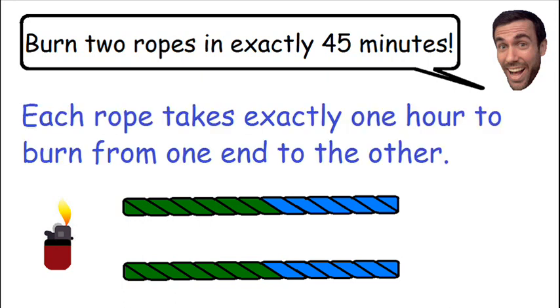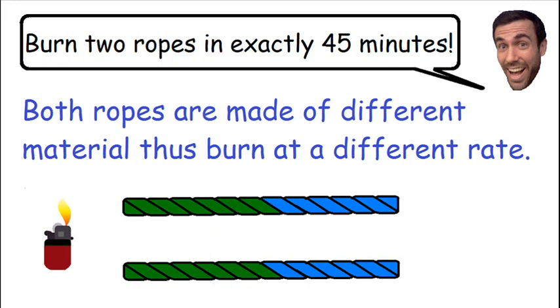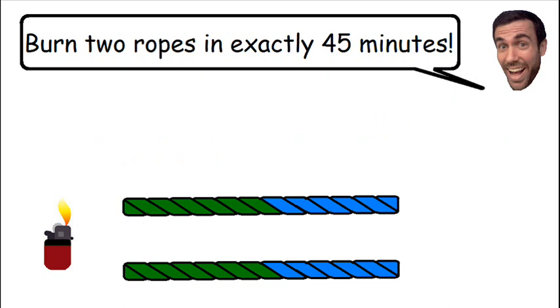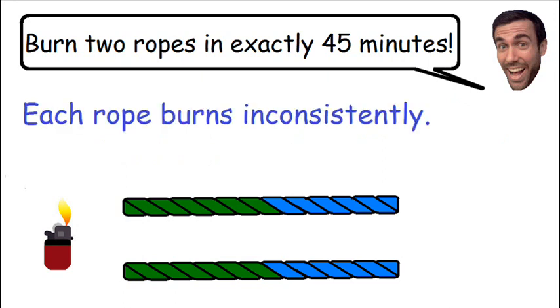Each rope takes exactly one hour to burn from one end to the other. Both ropes are made of a different material and therefore burn at a different rate. Furthermore, each rope burns inconsistently.